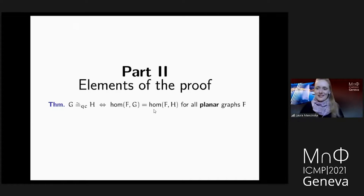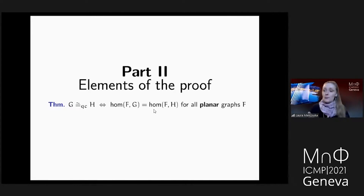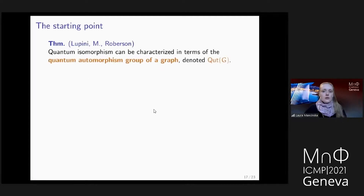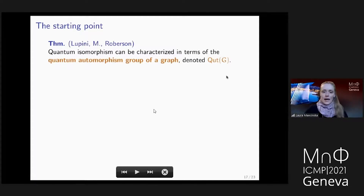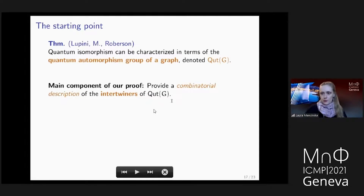Now let me proceed to the second and final part, where I want to tell you a little about the proof of how we get this combinatorial characterization. Although on the face of it, the statement has nothing to do with quantum groups, the proof actually proceeds via quantum groups. In our previous work, we showed that we can understand quantum isomorphism in terms of the quantum automorphism group of a graph, Qaut(G). The main component for proving our combinatorial characterization is to get a combinatorial description of intertwiners of this quantum automorphism group.